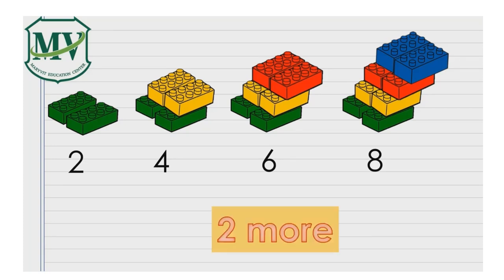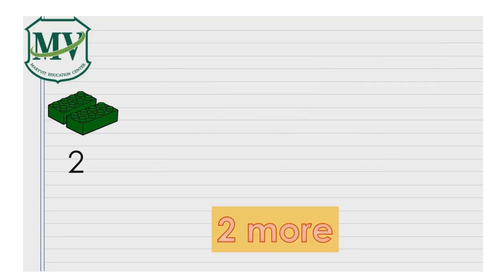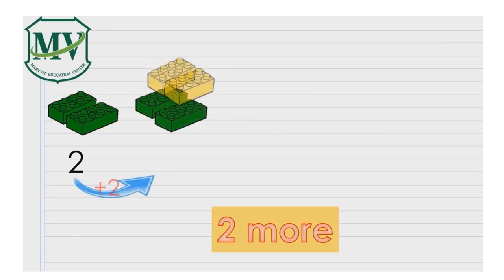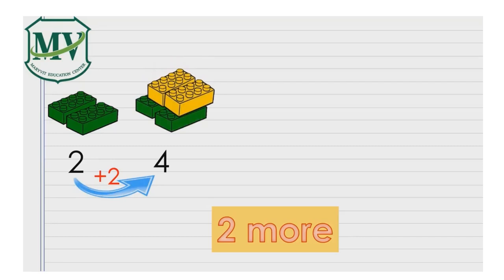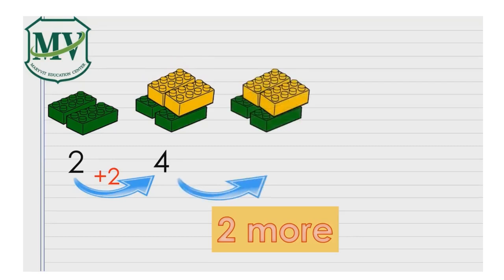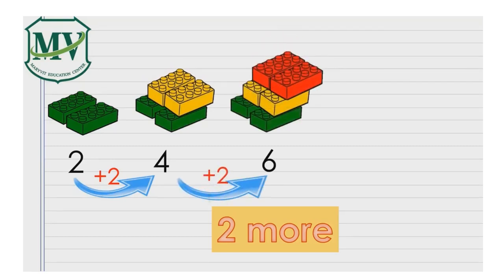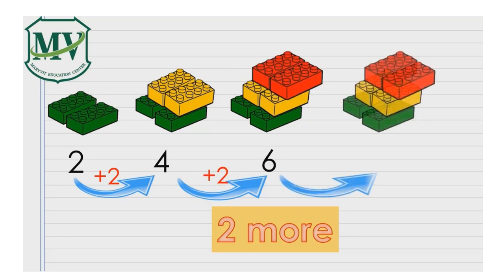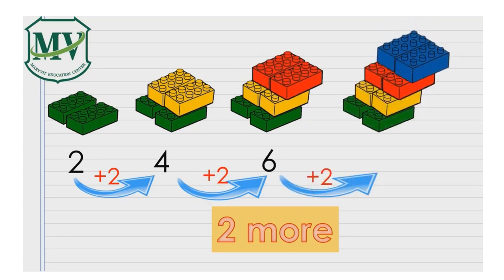It's two more. Two more of two is four. Two more of four is six. Two more of six is eight.